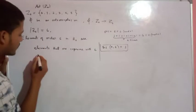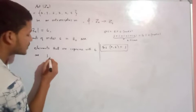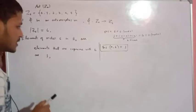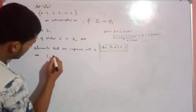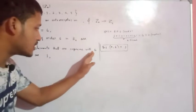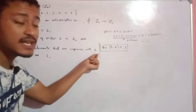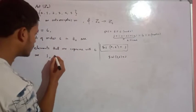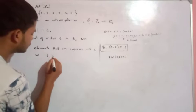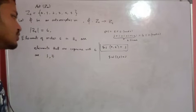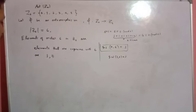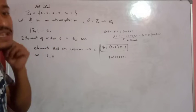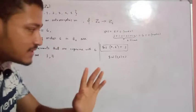The elements coprime to 6 are found as follows: 1 is coprime with 6. 2 is not coprime with 6 because 2 divides 6, and GCD(2, 6) = 2. 3 is not coprime with 6 because GCD(3, 6) = 3. Similarly, 4 and 3 are not coprime with 6. So the elements coprime to 6 are 1 and 5. Therefore, 1 and 5 have order 6 in Z6.